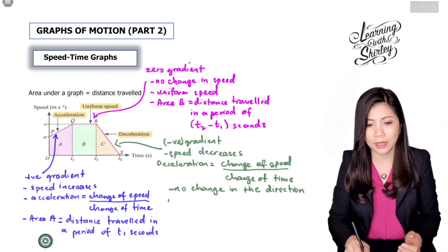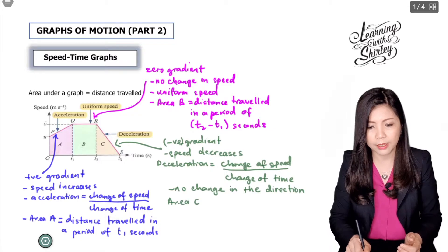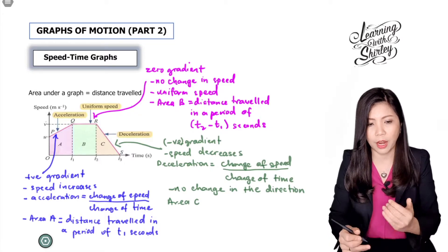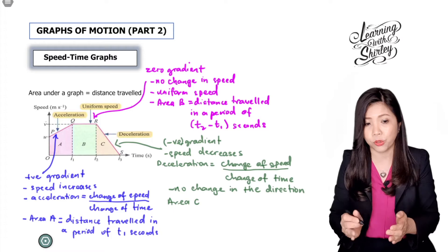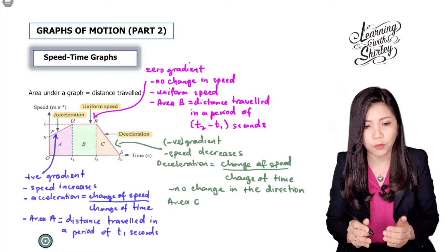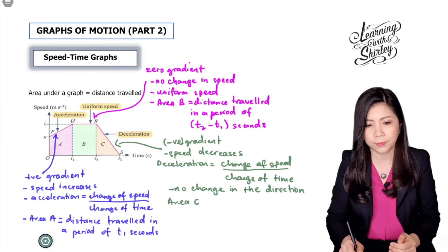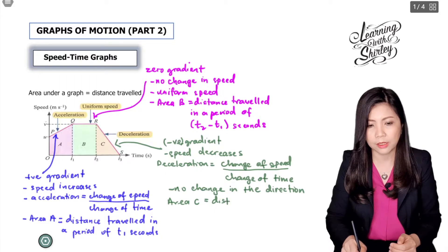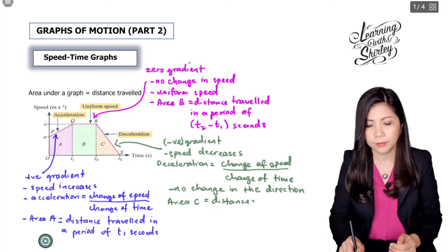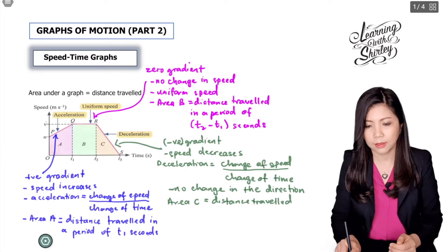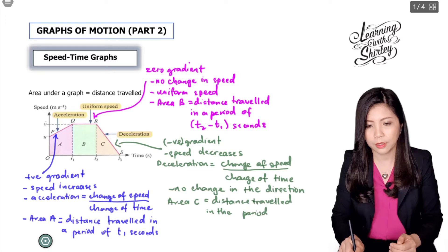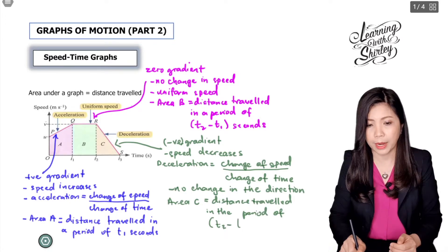Area C represents the area under the graph, which means it's the distance traveled in the period of T3 minus T2 seconds. So area C is the distance traveled in T3 minus T2 seconds.